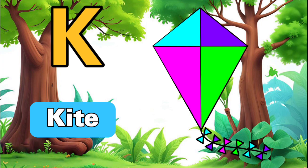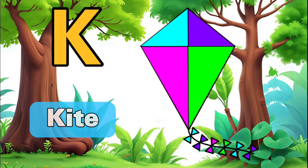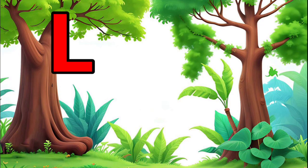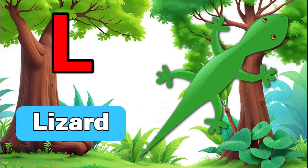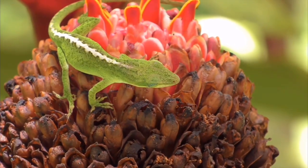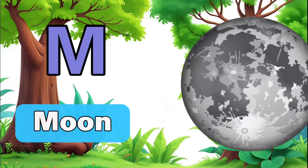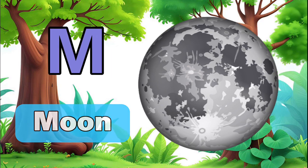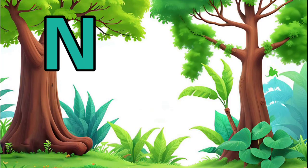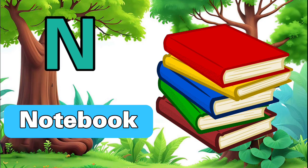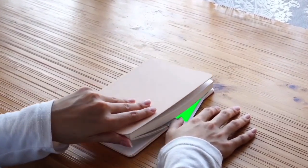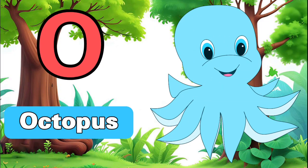K for kite. L for lizard. M for moon. N for notebook. O for octopus.